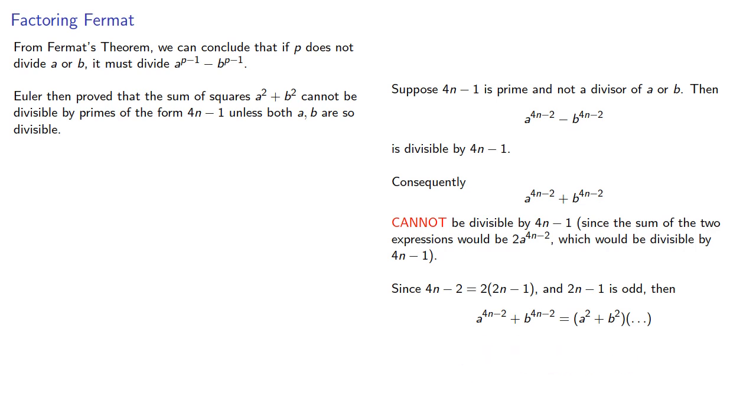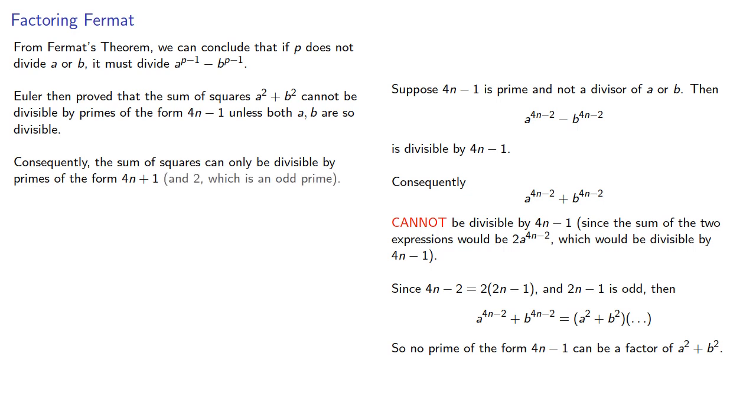And so no prime of the form 4n minus 1 can be a factor of a squared plus b squared. Consequently, the sum of squares can only be divisible by primes of the form 4n plus 1, and 2, which is an odd prime.